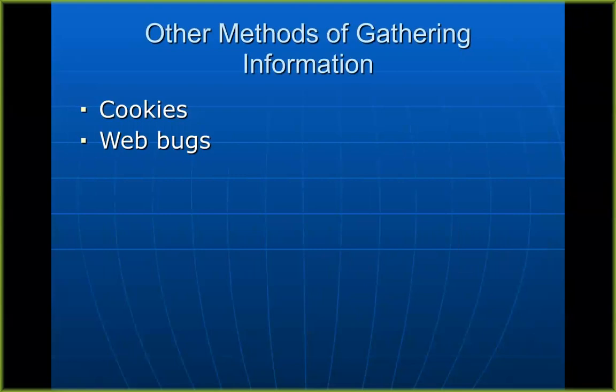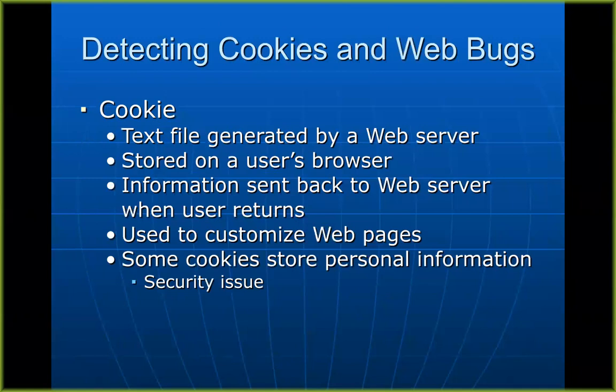Here are other ways to get information: cookies and web bugs. Cookies — Netscape invented this. HTTP has a serious limitation: it is a stateless protocol. If you send a request to a server and get a page, and send another request and get another page, it doesn't have any way to remember who you are. Originally, HTTP was just to publish static information, like a printed newspaper page. There were no accounts, no login, no social media — you just view pages and everybody sees the same page.